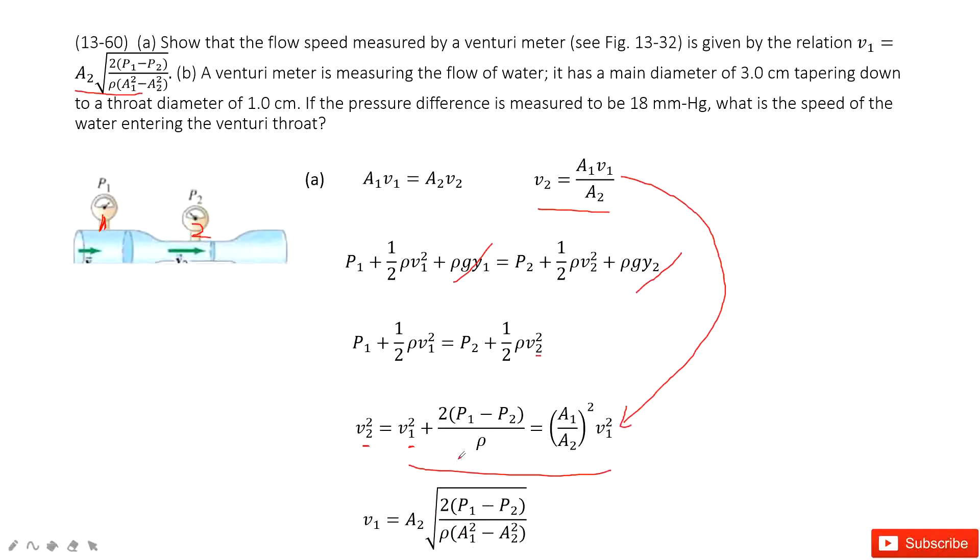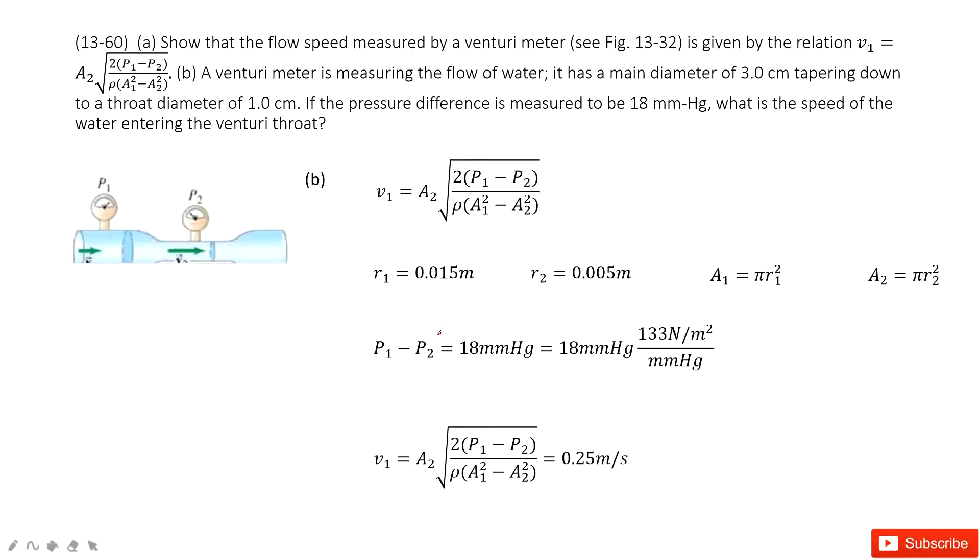Now the second part tells us the diameter, the main diameter is given, and the throat diameter is given, and the pressure difference is given. Can you find the speed for v1? Sure. We can see what is given. We list it there.